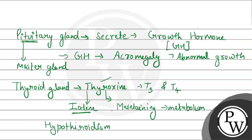In the case of hypothyroidism, the person can develop a disease known as goiter. In this condition, enlargement of the thyroid gland occurs, causing the throat region to be enlarged. This condition is called hypothyroidism.